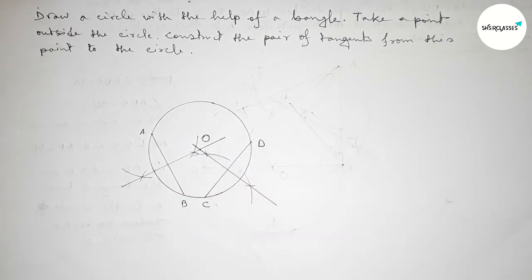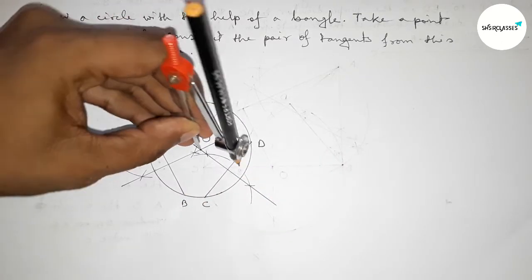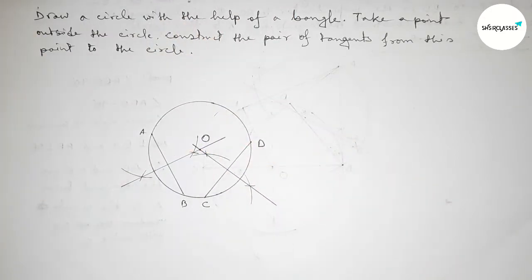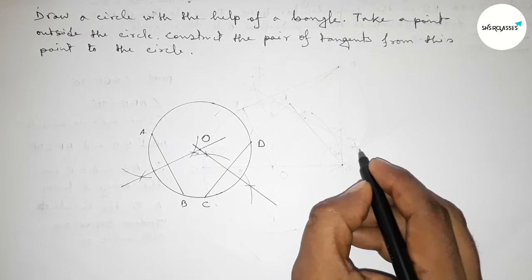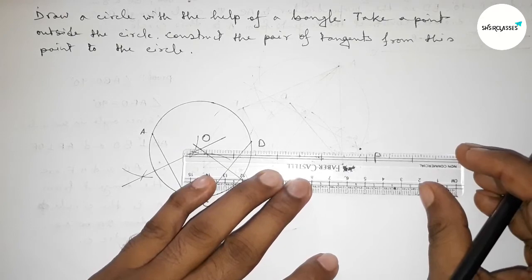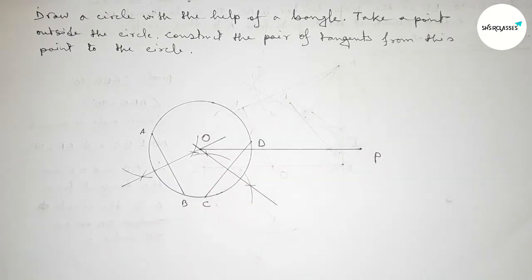Taking point O here — O is the center of this circle. Checking this, and this is perfectly the center of this circle. Next, taking a point P outside the circle. Now joining O and P; the length OP is arbitrary.